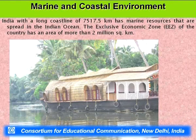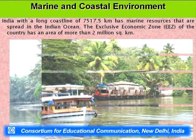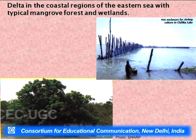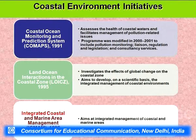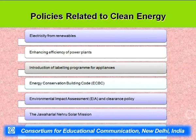India has a large area under marine and coastal environments. In the eastern coast, mangroves were replaced for aquaculture development, posing a serious threat. Key initiatives include the Coastal Ocean Monitoring and Prediction System, Land-Ocean Interaction in the Coastal Zone, and Integrated Coastal and Marine Zone Management. Clean energy and energy efficiency are also very important components of the environmental program.